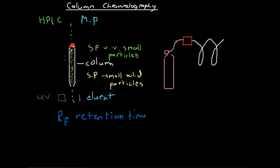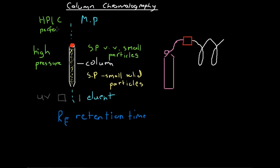Because those particles are so small and there's such high surface area, it's going to take a very long time for everything to move through the column due to so much adsorption. So we often conduct HPLC at very high pressure — we pump the mobile phase through at very high pressure to speed things up, without sacrificing the extra accuracy from the very small particles. It's important to remember that the P in HPLC stands for performance and not pressure — it's high performance liquid chromatography, not high pressure liquid chromatography.